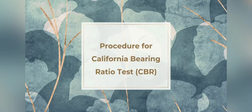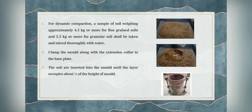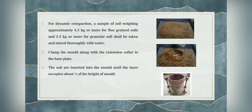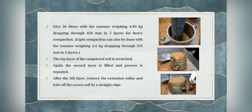Procedure for the California Bearing Ratio test — CBR for dynamic compaction. A sample of soil weighing approximately 4.5 kg or more for fine-grained soils and 5.5 kg or more for granular soils shall be taken and mixed thoroughly with water. Clamp the mold along with the extension collar to the base plate. The soil is inserted into the mold in layers, each occupying about one-fifth of the height of the mold. Give 56 blows with the rammer weighing 4.89 kg dropping through 450 mm in five layers for heavy compaction.